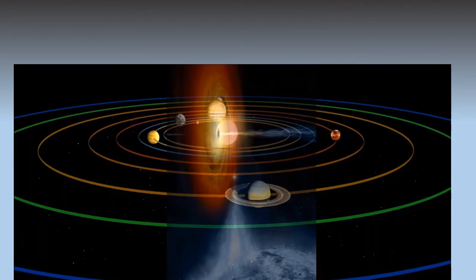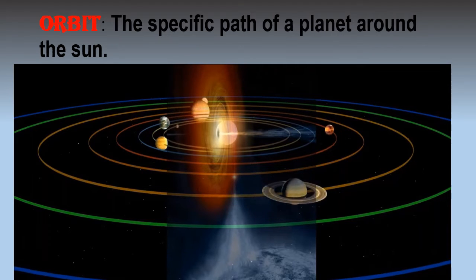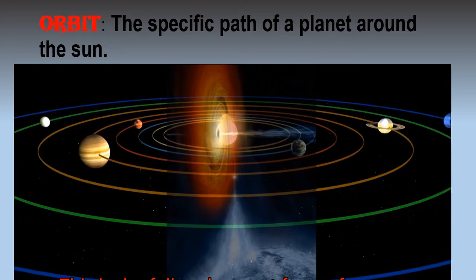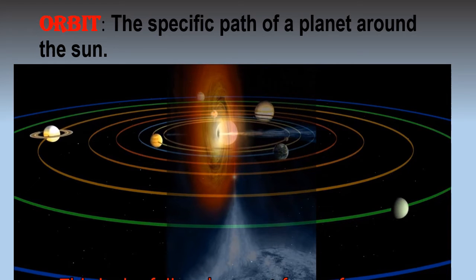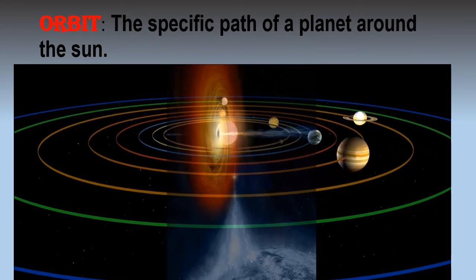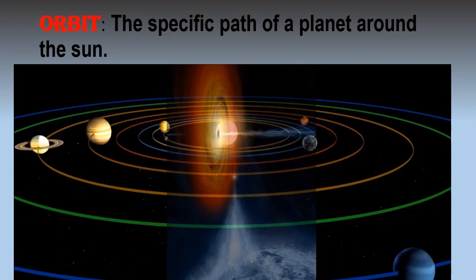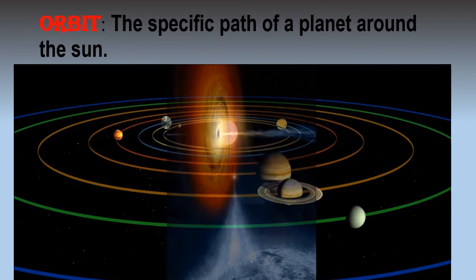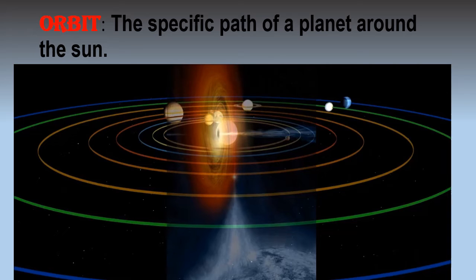So let's talk about an orbit. What is an orbit? The specific or particular path of a planet around the sun is known as an orbit. Every planet moves on its particular path which it does not change. As you can see in this video, in the center there is a sun and there are colorful lines around the sun. These colorful lines are imaginary lines — they are not actually or visually present — but these planets move on their particular paths, known as their orbits.